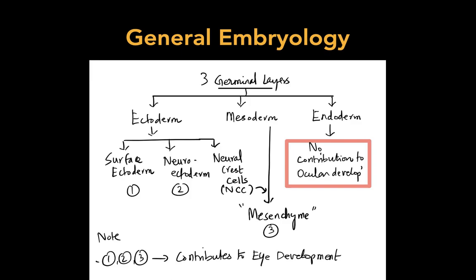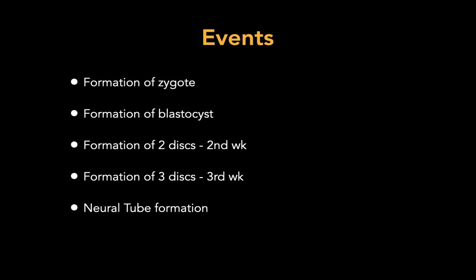Let's start from scratch — from fertilization: how the zygote is formed, how the blastocyst is formed, how bilaminar and trilaminar discs are formed, and how the neural tube is formed. These are the events we will discuss in the general embryology part of this lecture.